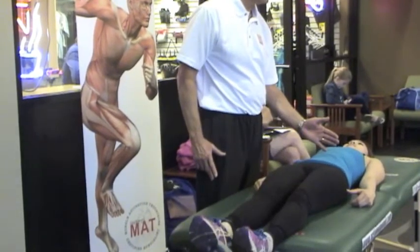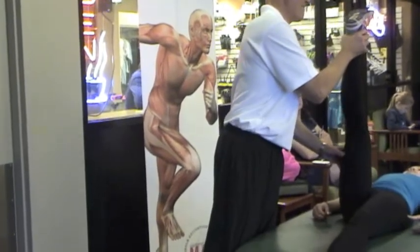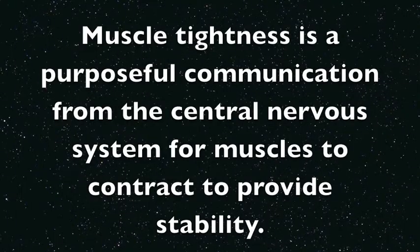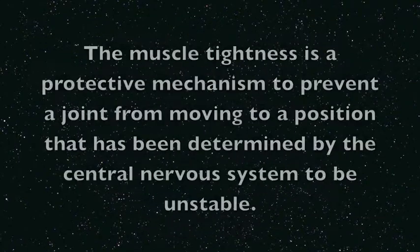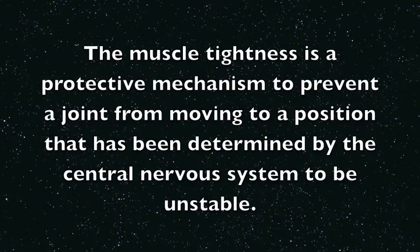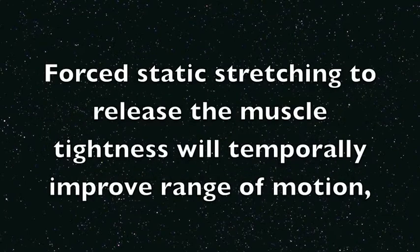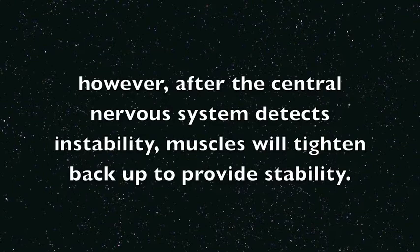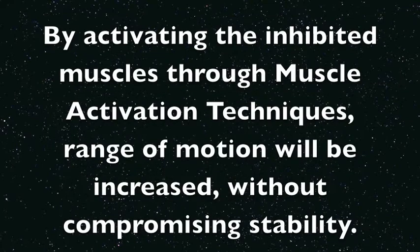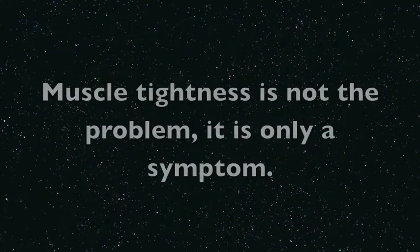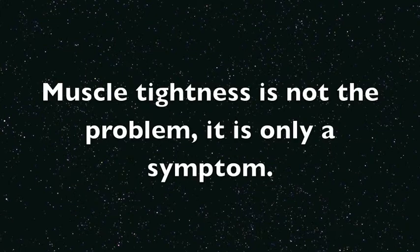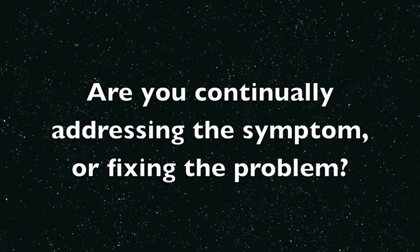I changed her range. Muscle tightness is a purposeful communication from the central nervous system for muscles to contract to provide stability. The muscle tightness is a protective mechanism to prevent a joint from moving to a position that has been determined by the central nervous system to be unstable — like when you step on ice or a slippery surface, your muscles will react by tightening up to provide immediate stability. Forced static stretching to release the muscle tightness will temporarily improve range of motion. However, after the central nervous system detects instability, muscles will tighten back up to provide stability. By activating the inhibited muscles through muscle activation techniques, range of motion will be increased without compromising stability. Muscle tightness is not the problem — it's only a symptom. Are you continually addressing the symptom or fixing the problem?